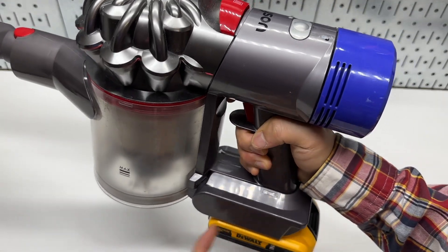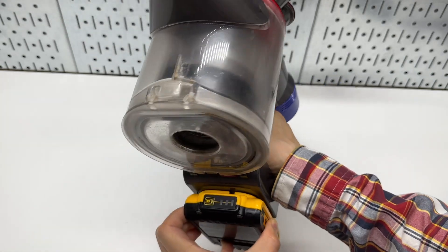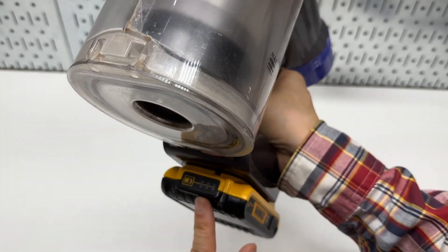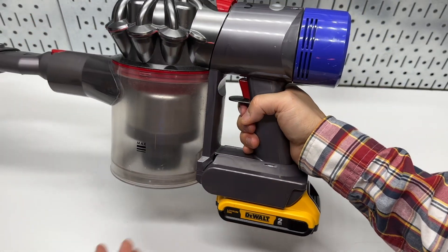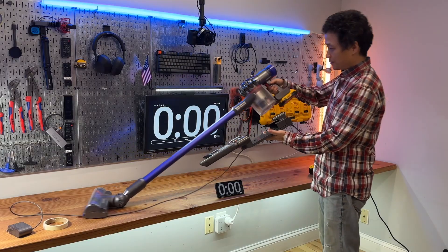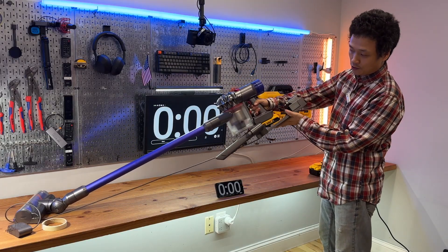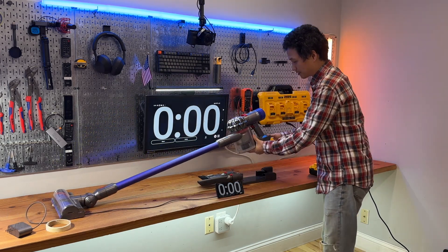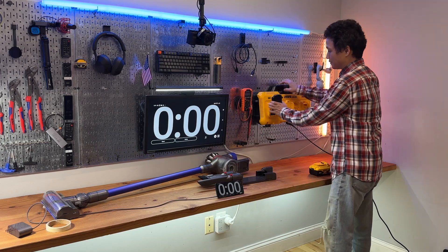When the indicator shows red, it means the battery is about to be depleted. I can also use the integrated battery indicator on the DeWalt battery itself to check the battery level. After installing this adapter, it will no longer fit the original wall mount. It can only be recharged using the DeWalt battery charger.